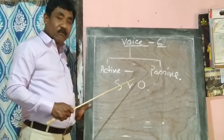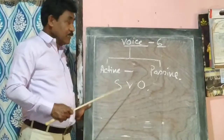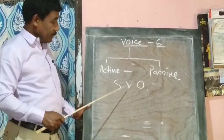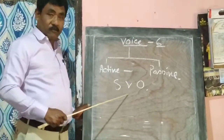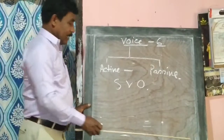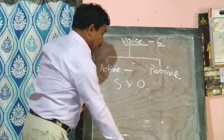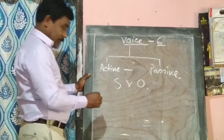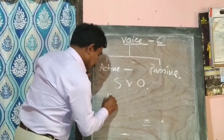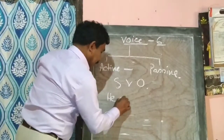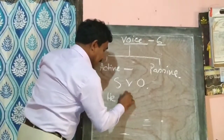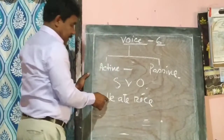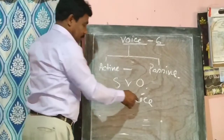Let's take a look at an example from my book. He eats rice. It is subject plus verb plus object.